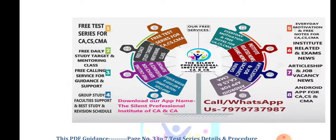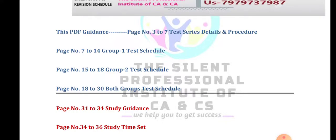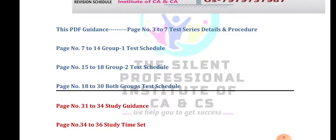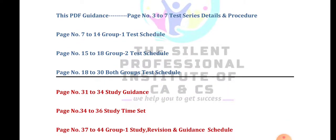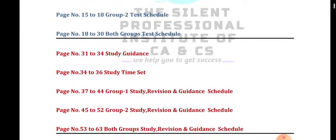Now we will look at the study plan. When you open the schedule, note that the format is the same for Foundation, IPCC/Inter, and Final students — only the dates differ. In the PDF, page numbers 3–7 cover test series details, pages 7–14 have the Group 1 test schedule, and so on for all groups. You can read the page index first and then navigate accordingly.